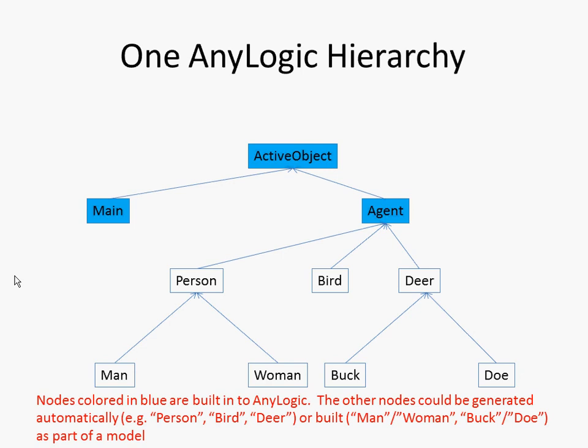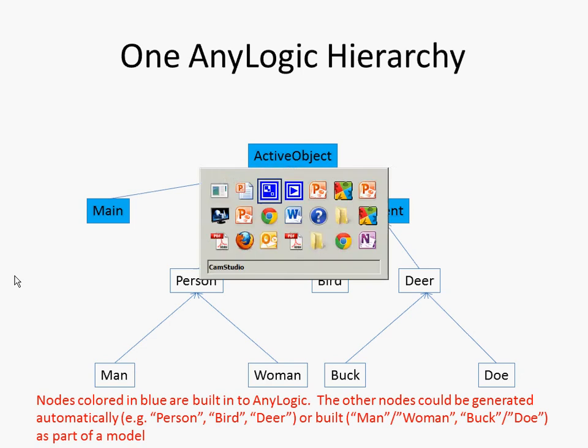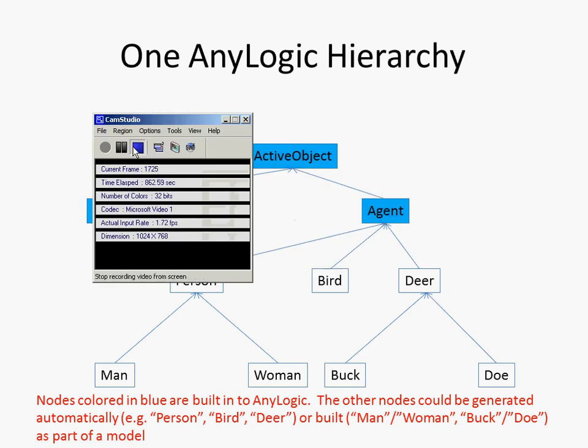We're going to see how this fits together, and hopefully it will help you understand why we'll sometimes see a reference to an agent and have to cast it to a person — not to coerce it, but because it is an agent and also a person. A woman is also a person, also an agent, also an active object. We'll see how this structure fits together next time, take a look at some models which exploit this, and see how central it is to Java and to AnyLogic from the ground up. That's all for today.